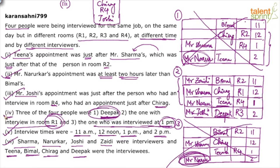Let's verify: Tina's appointment was just after Sharma's, which was just after R2 — satisfied. Narurkar was at least two hours later than Bimal — satisfied. Joshi was just after room four, which was just after Chirag — satisfied. The three distinct people for point four are verified. All conditions are satisfied by case two, so this is the final answer.